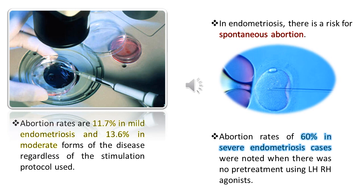In endometriosis, there is a risk of spontaneous abortion. Abortion rates are 11.7% in mild endometriosis and 13.6% in moderate forms, regardless of the stimulation protocol used. Abortion rates of 60% in severe endometriosis cases were noted when there was no pre-treatment using LHRH agonists.